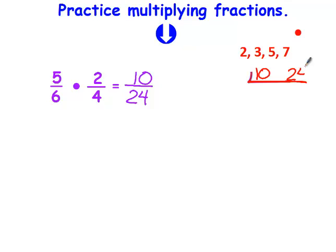And I run it through the magic numbers 2, 3, 5, and 7. They're both even, so I'm going to divide by 2. 2 goes into 10 five times. 2 goes into 24 twelve times. I'm going to see if I can simplify it some more.